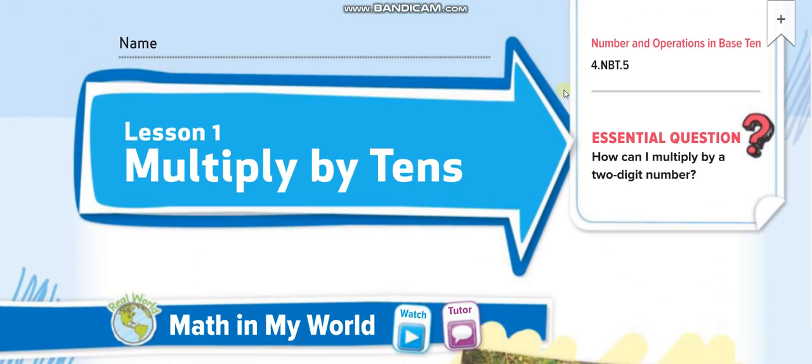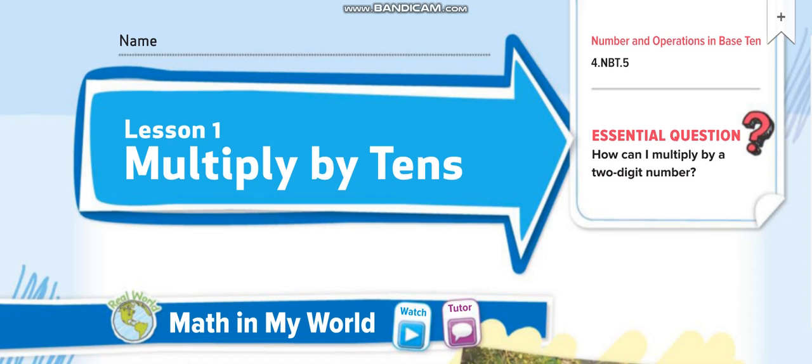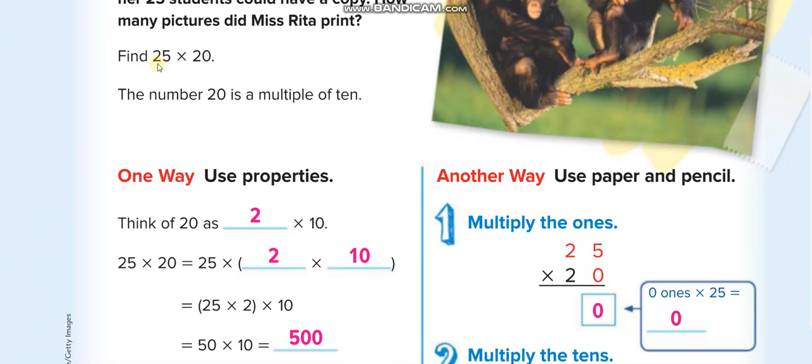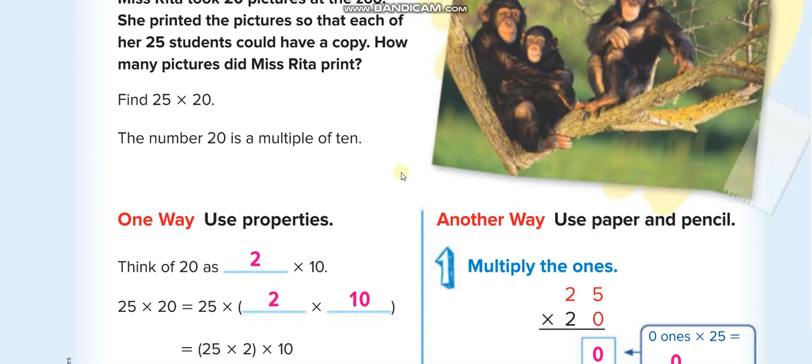As you guys know that tens, it's the place value. The first one is 1's, the second one is 10's, it has 2 digits. So basically we are multiplying 2 digit numbers by 2 digits, like this. 25 times 20, 2 digits. And they are saying it tens because of the zeros, we are having zeros in this lesson.